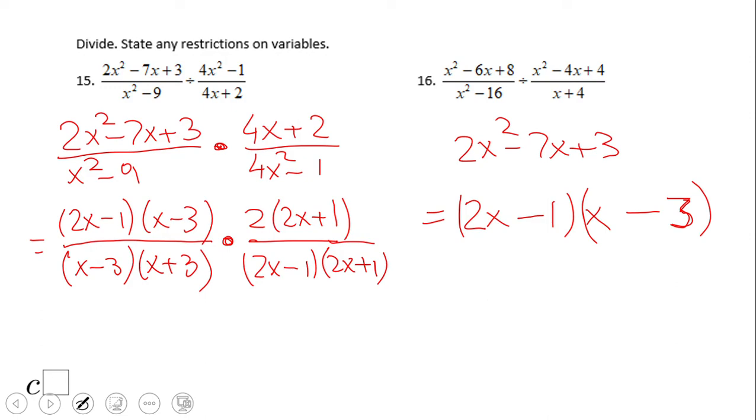So let's take a look here. (2x-1) and (2x-1), right? (x-3) here and (x-3) here, and (2x+1) here and (2x+1) here. So the final answer is what? 2/(x+3). This is the final answer for number 15.